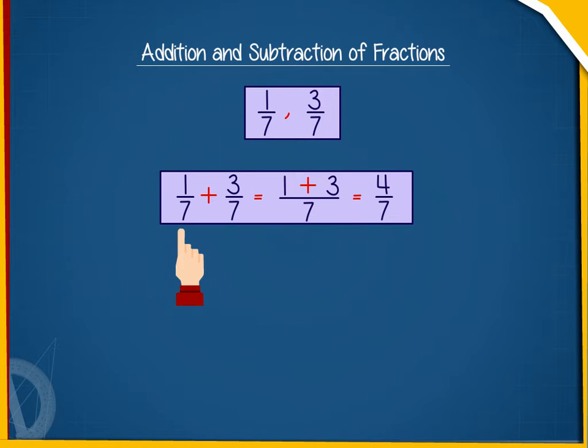1 by 7 plus 3 by 7 is equal to 1 plus 3 by 7, equal to 4 by 7.